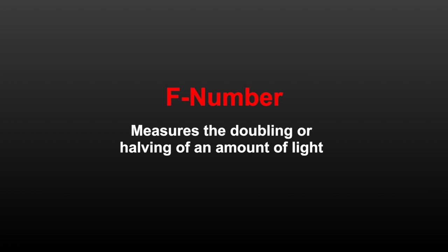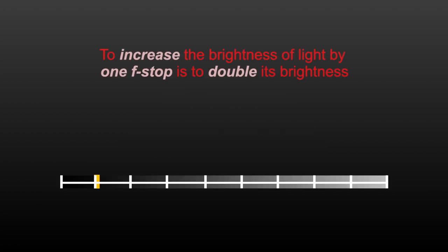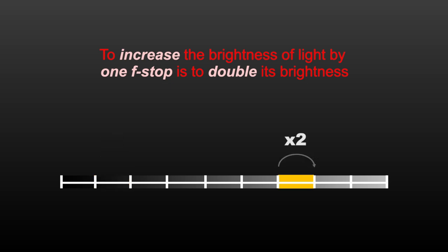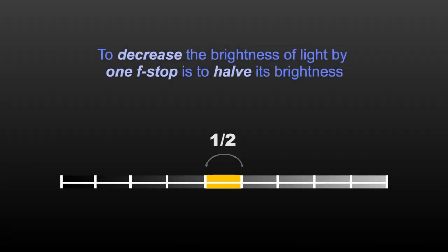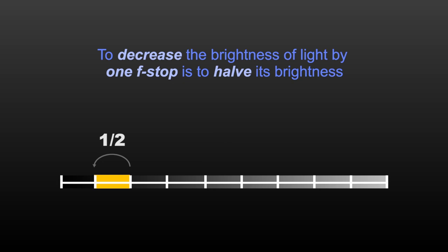Quite simply, an F number is the doubling or halving of the brightness of light. If you take the existing amount of light, however much that may be, and double its brightness, you just increase the light by one F number. Conversely, if you take the current amount of light and reduce it by 50%, you just decreased it by one F number.